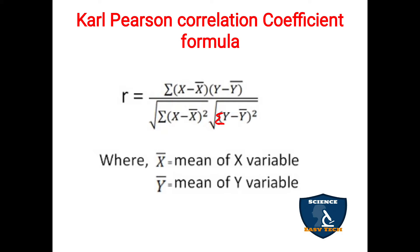Where x̄ means the mean of the x variable, and ȳ is the mean of the y variable. This is the formula for calculating correlation coefficient as given by Karl Pearson. Let's see how we can apply this formula for example sums.